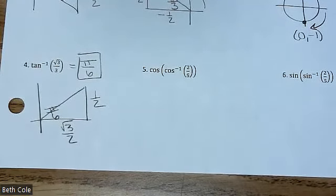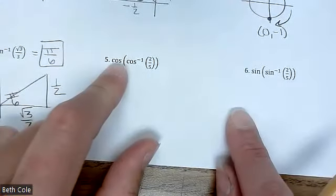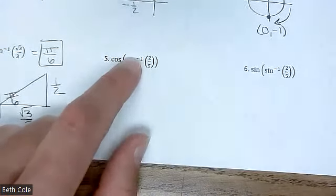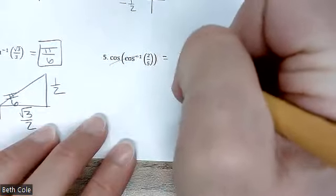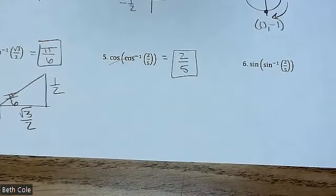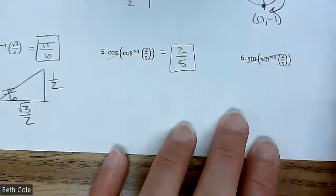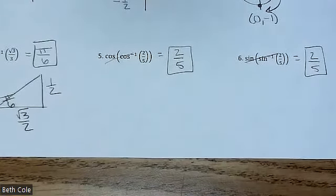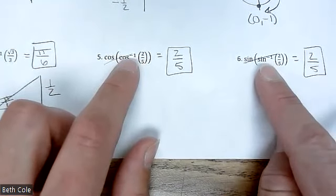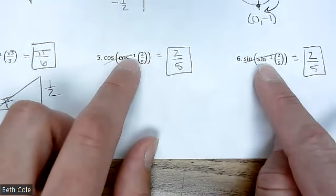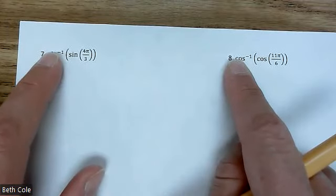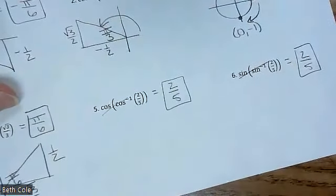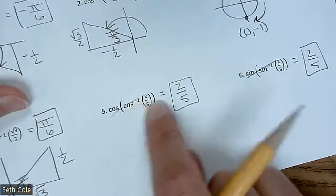I want to do a compare and contrast. Do you see how this is cosine of cosine inverse? What do inverse functions do to each other? Like squared and square root — they cancel, and you simply get two fifths. That is the only question on the test where I don't need a triangle. Do you see how this one is sine of sine inverse? Those will cancel and you get whatever's there, which in this case is two fifths. The inverse one has to be on the inside for that to work. If the inverse one is on the outside, that won't work.